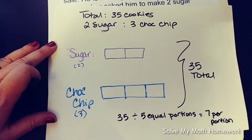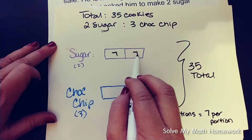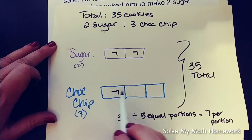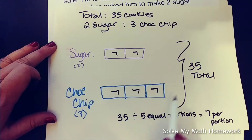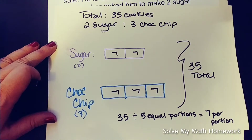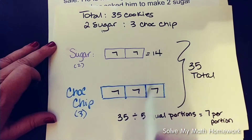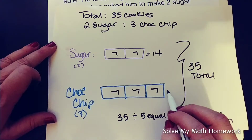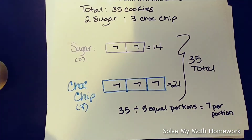So then you know that there are seven in each rectangle. Why seven in each rectangle? Because if there's seven in one, there has to be seven in all — they are equal portions or equal rectangles worth of cookies. So it looks like David's making 14 sugar cookies and 21 chocolate chip cookies.